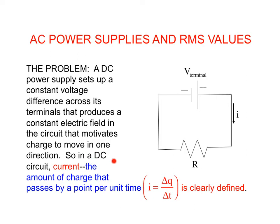So in a DC setting, current, which is the amount of charge that passes by a point per unit time, is very clearly defined.